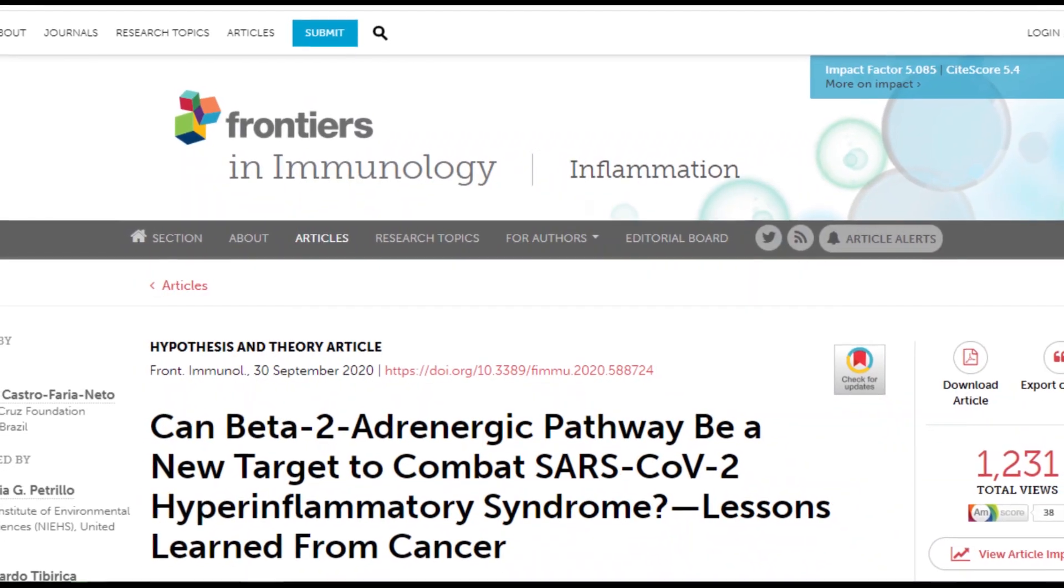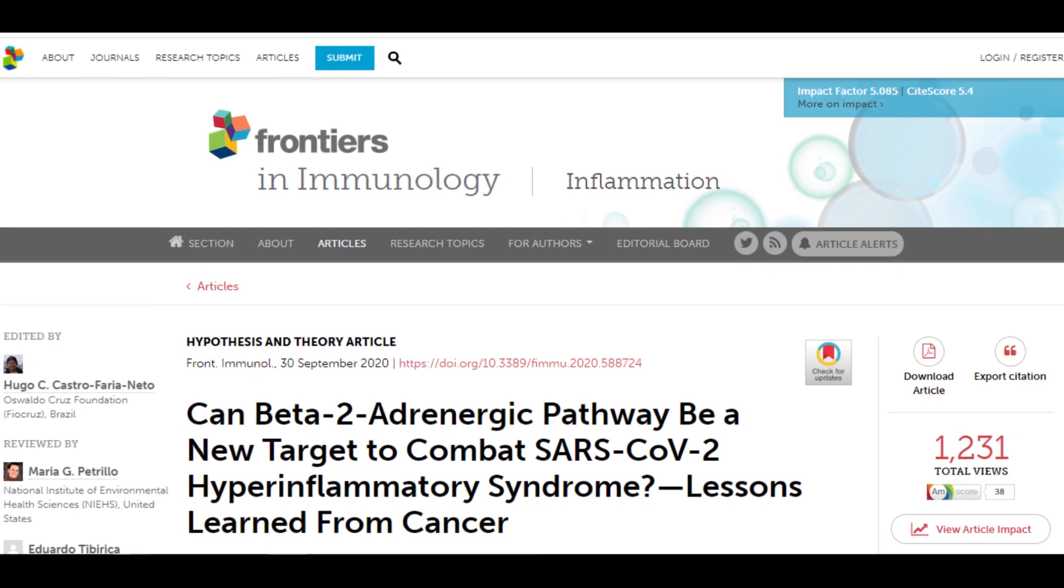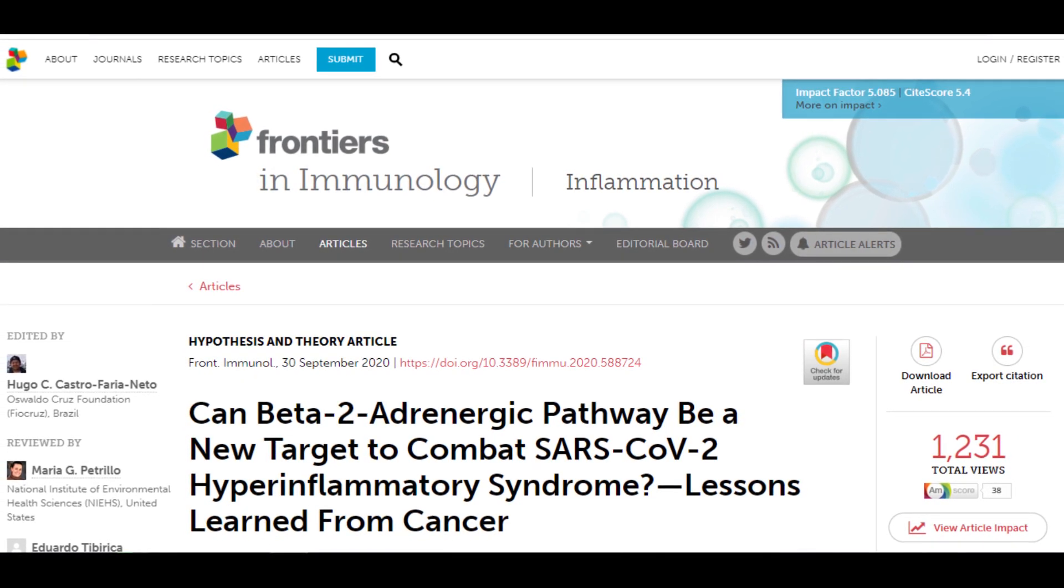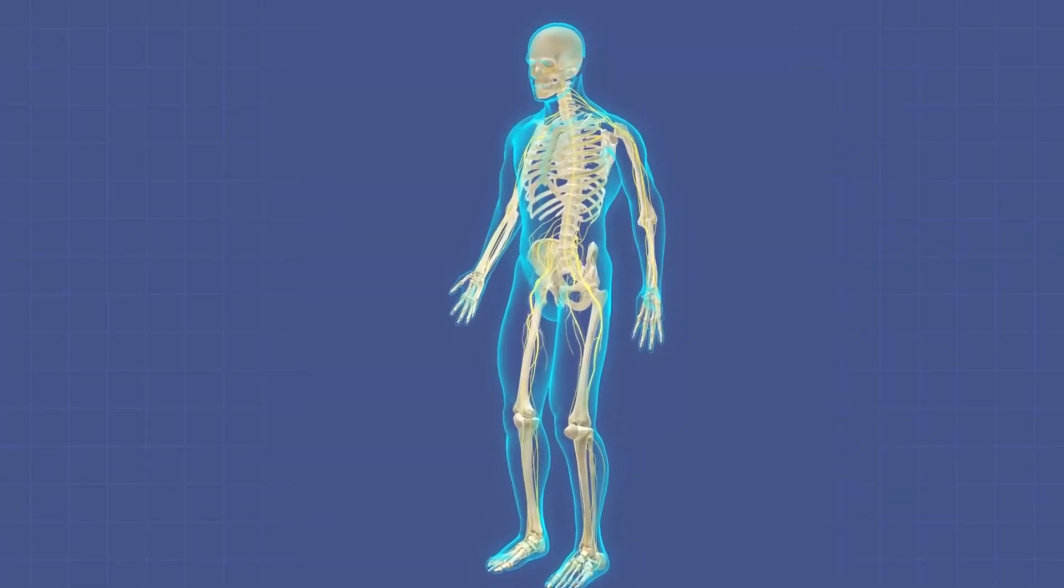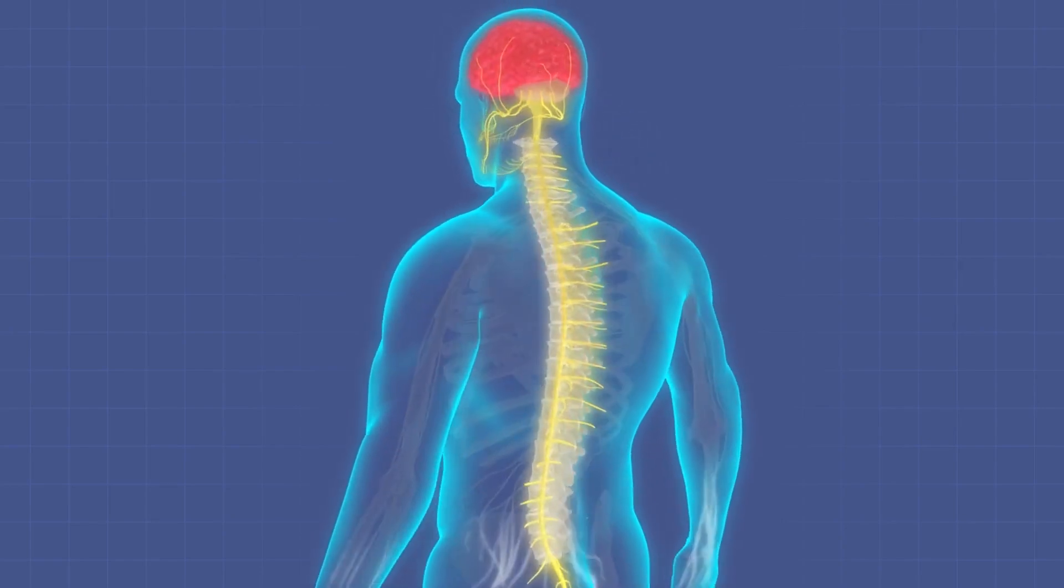In the paper, published in The Frontiers of Immunology, scientists reviewed propranolol and similar beta-blockers. They noted that these medications may help manage inflammation caused by cancer and overactive immune systems.